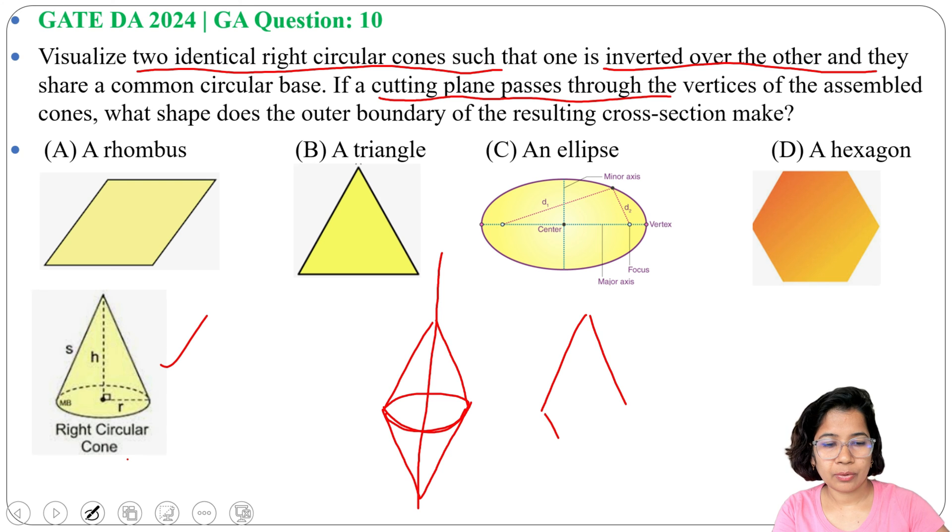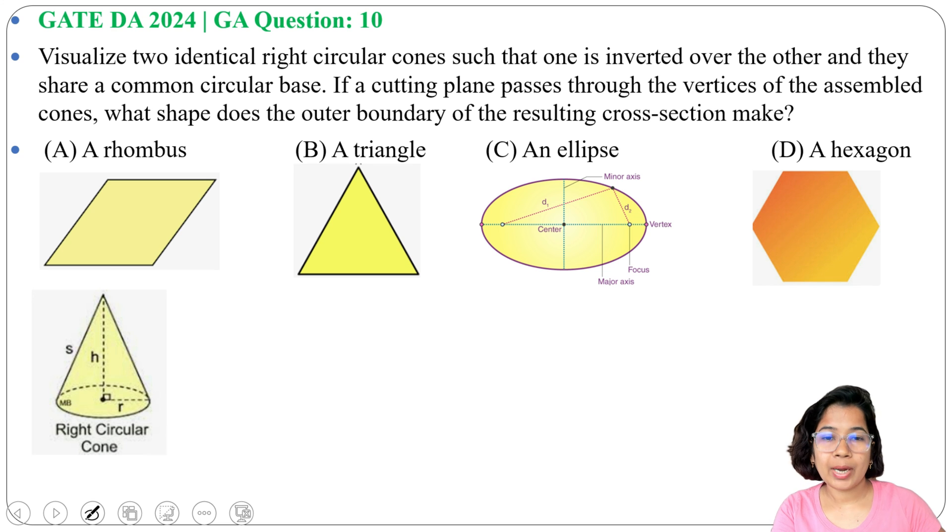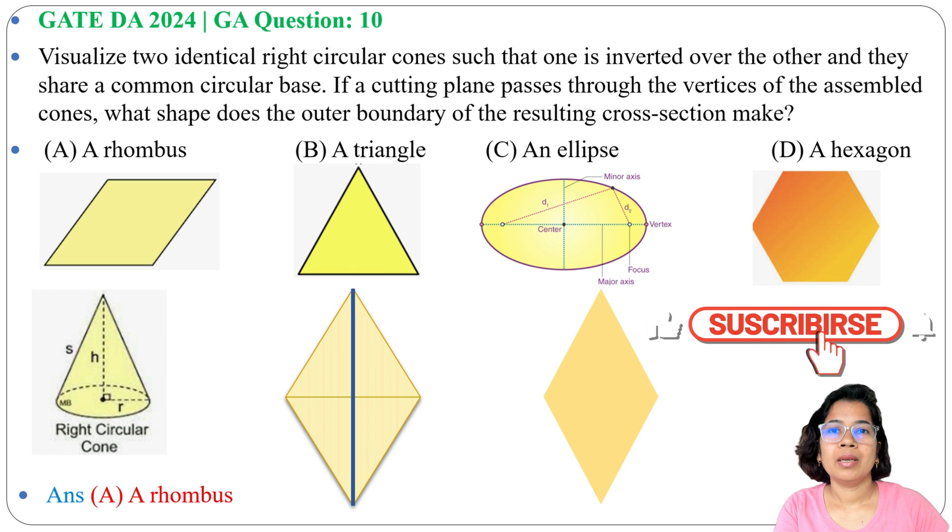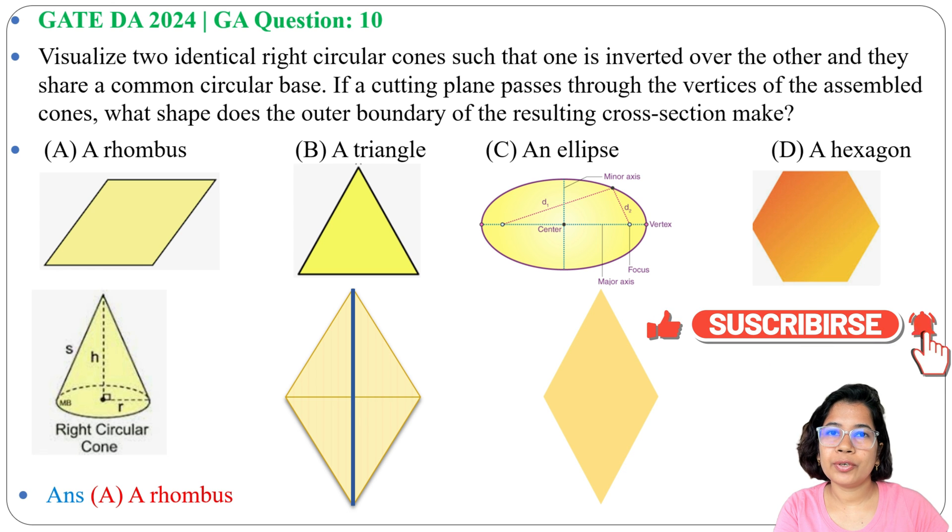We have two circular cones, one inverted over the other, and one cutting plane passes through them. The resulting cross-section makes a rhombus. If this lecture is helpful for you, please like, share, and subscribe. Thank you.